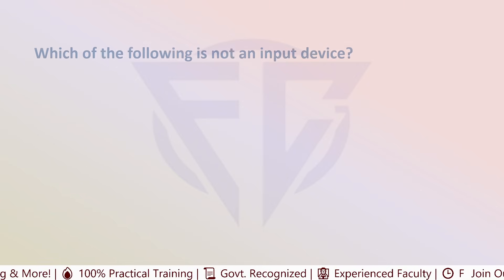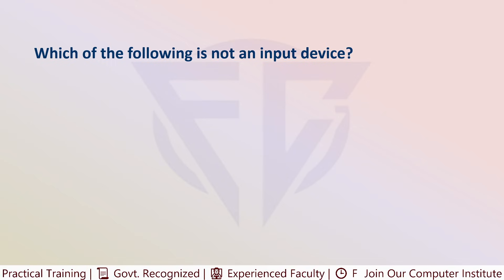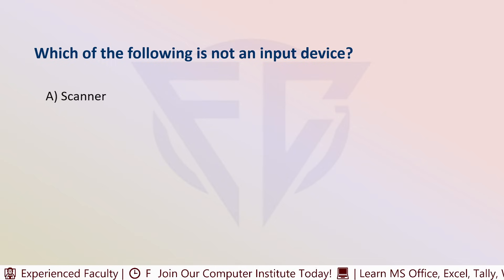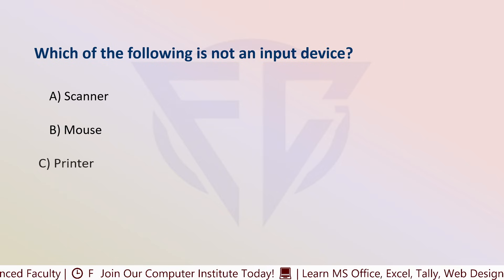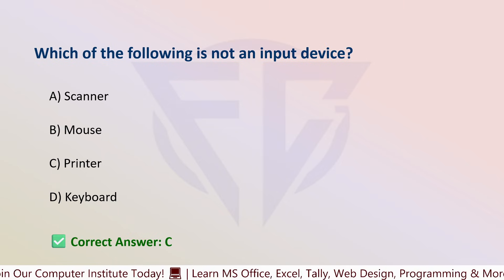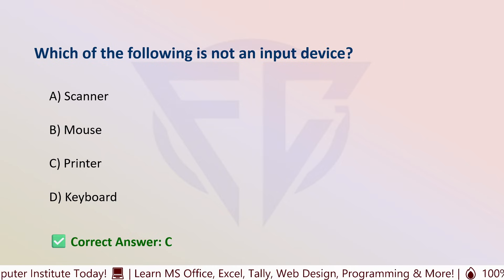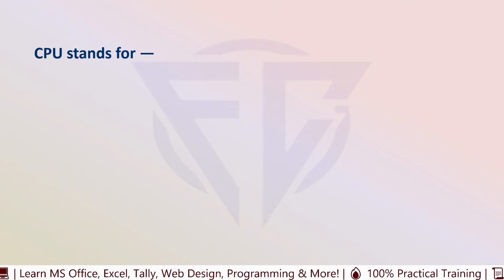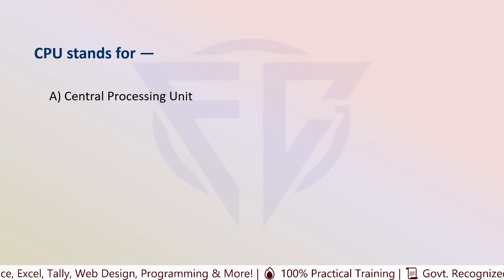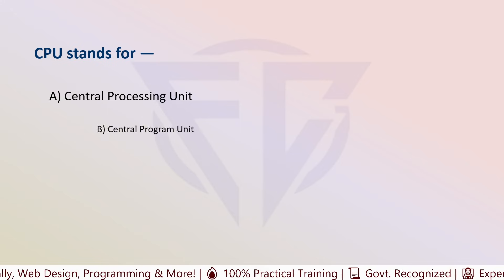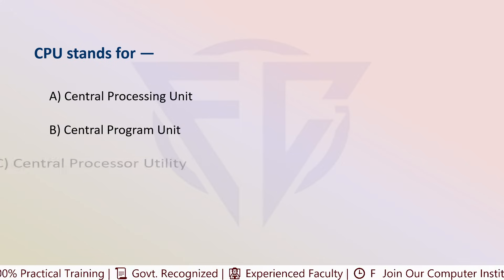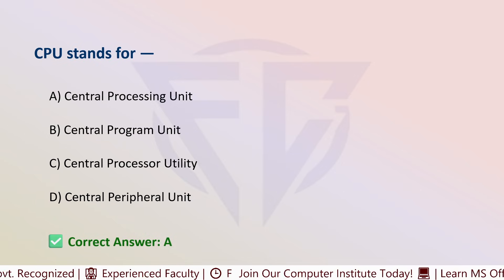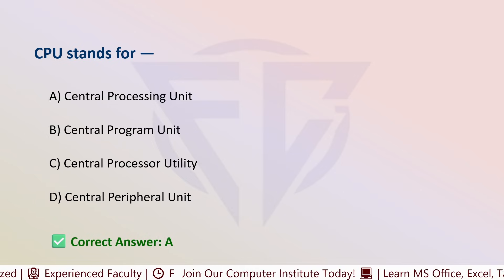The next question is: which of the following is not an input device? Options are: A) Scanner, B) Mouse, C) Printer, and D) Keyboard. The correct answer is C, that is printer. The next question: CPU stands for — options are: A) Central Processing Unit, B) Central Program Unit, C) Central Processor Utility, and D) Central Peripheral Unit. The correct answer is A, that is Central Processing Unit.